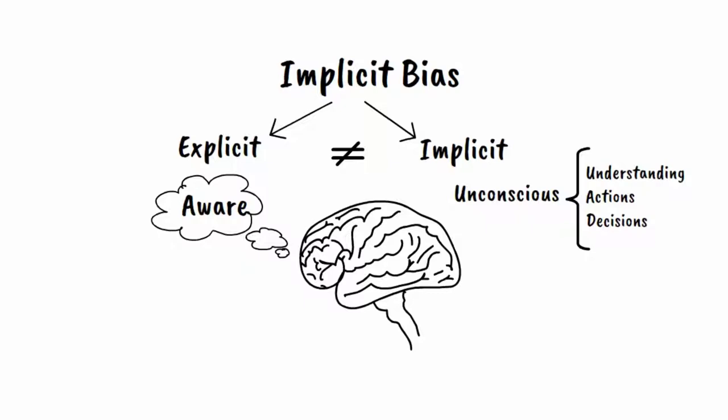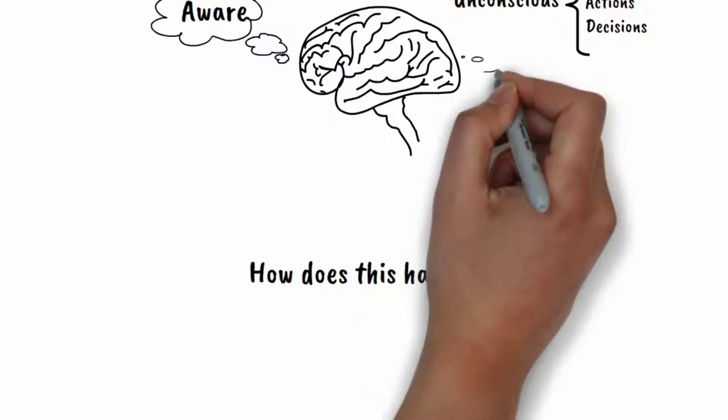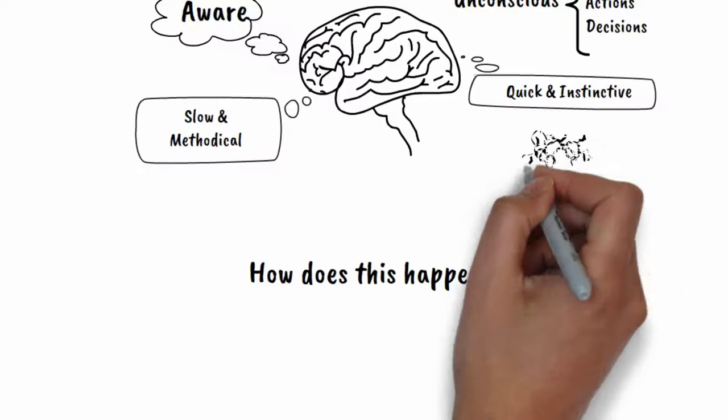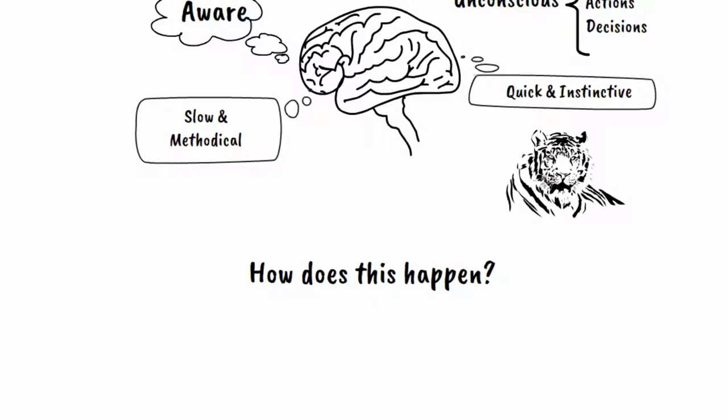How does this happen? There are two types of thinking: quick and instinctive, and slow and methodical. The former may help us identify patterns more quickly and even protect us from potential threats that may have helped us survive thousands of years ago. However, it is fallible.